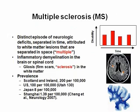In multiple sclerosis, distinct episodes or attacks occur at multiple time points as well as at multiple areas in the brain or the spinal cord. So, attacks or regions are multiple in time and space. Inflammatory demyelination in the brain results in gliosis, that is firm scar or sclerotic tissue. This is why the disease is called multiple sclerosis.